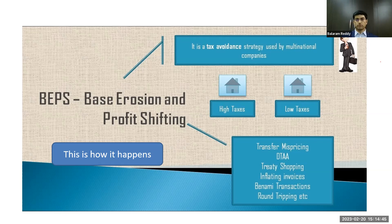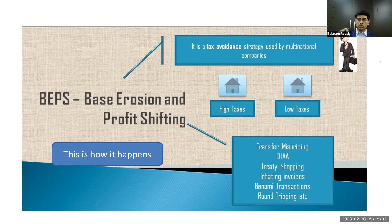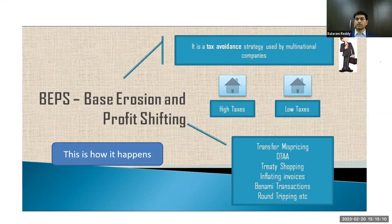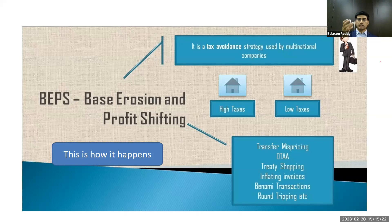The ways they were doing this include transfer mispricing, taking advantage of double taxation avoidance agreement laws — which may be legitimate — and treaty shopping. Wherever there are treaties favorable to the business, they would utilize those and shift profits, or inflate invoices. When companies have branches in various countries, they conduct transactions between those entities and inflate the invoice values so that the situation becomes favorable to minimize tax.